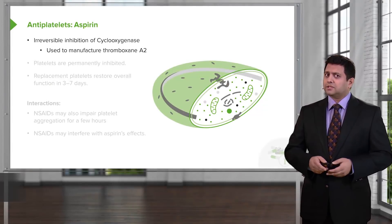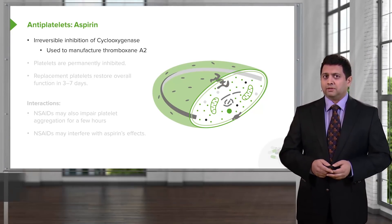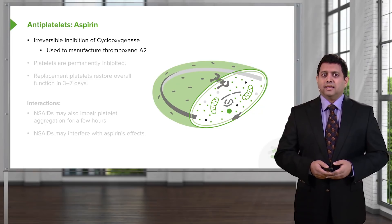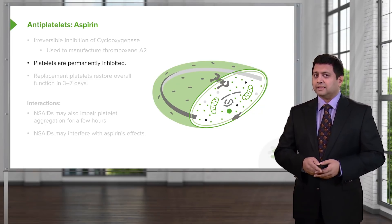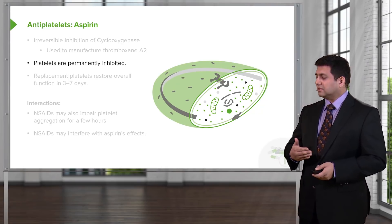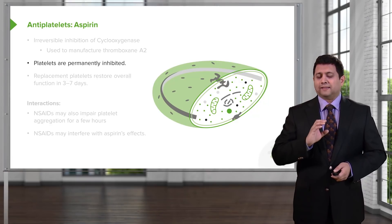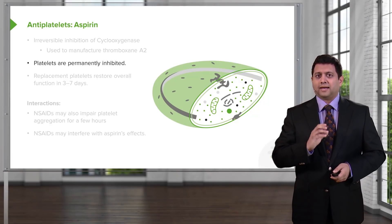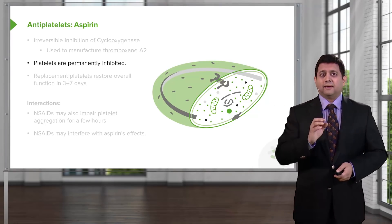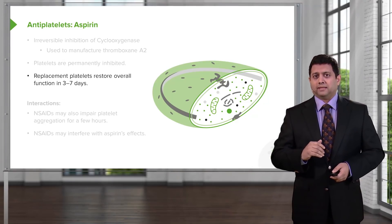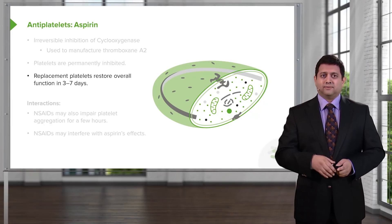This brings us to our first drug: aspirin. Aspirin is an irreversible inhibitor of cyclooxygenase, which is used to manufacture thromboxane A2. When you inhibit cyclooxygenase with aspirin, platelets are permanently inhibited — meaning the anti-platelet function of aspirin lasts for the entire life of that platelet. Only replacement platelets will be functional, so aspirin's effect lasts anywhere between 3 and 7 days.